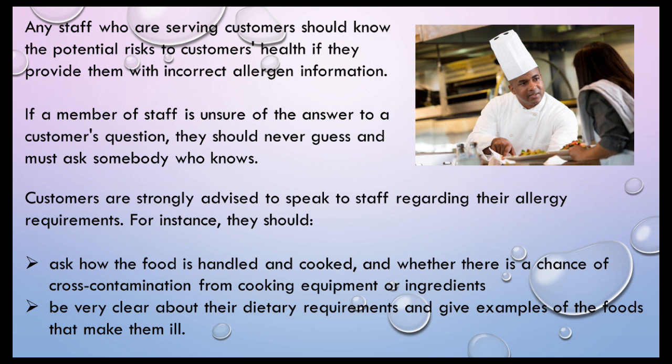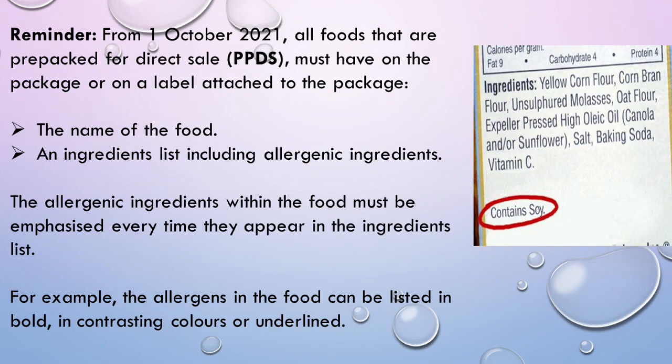If you're a customer and you're not sure, you've got to make sure that you insist so that they provide correct and enough information. Remember, it's all about your health. As a reminder from Module 2, from 1st October 2021, all foods that are pre-packed for direct sale, PPDS, must have on the package or on the label attached to the package: the name of the food, an ingredients list including allergenic ingredients.